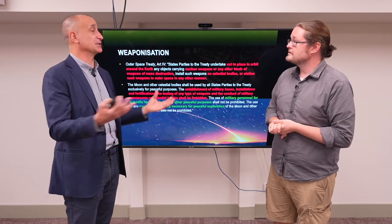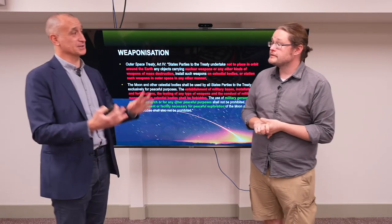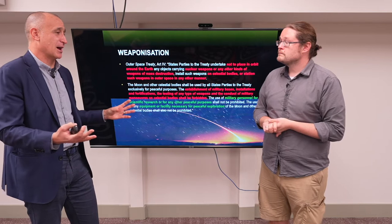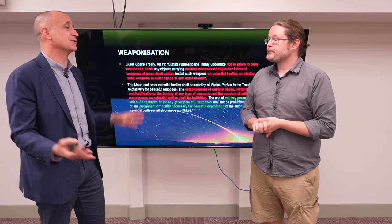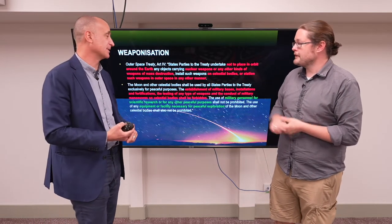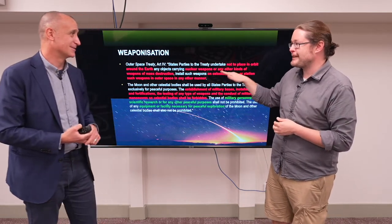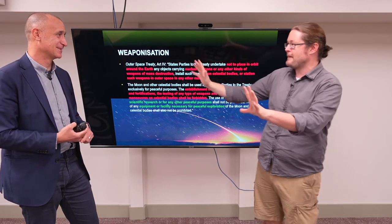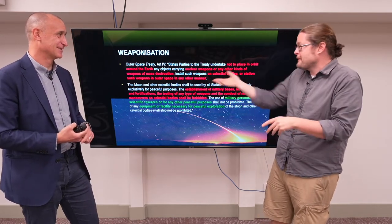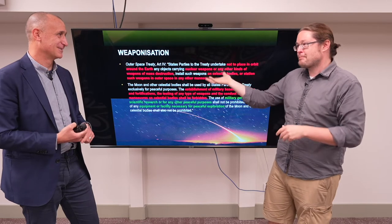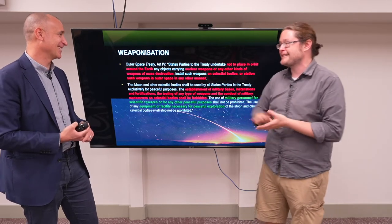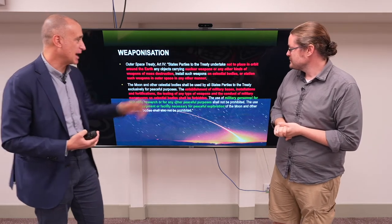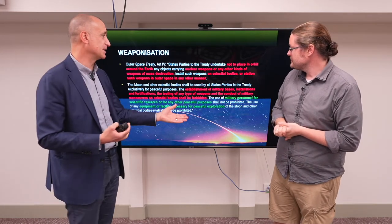In fact, many people see the Outer Space Treaty as a disarmament treaty rather than specifically a treaty about space. It's part of a series of disarmament measures. Two years before the Moon landing, nations were agreeing not to place weapons permanently in space — which was considered a pretty significant step in 1967.